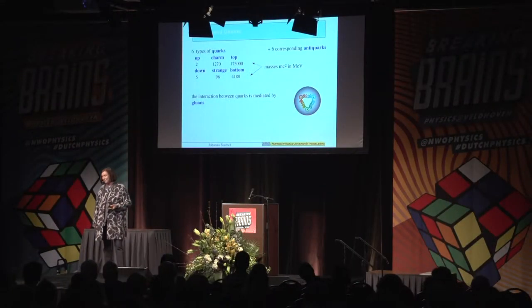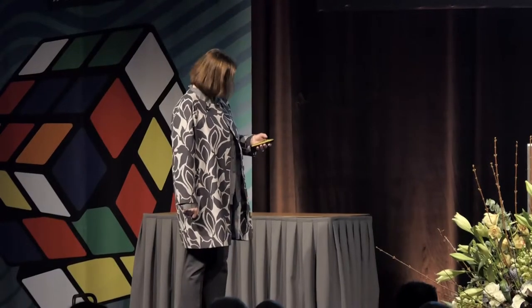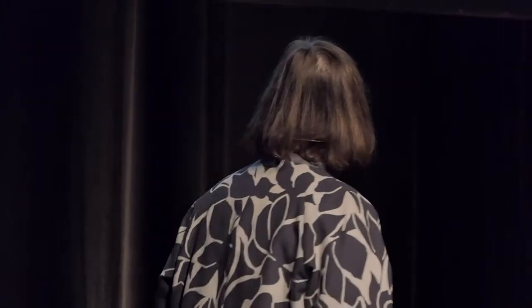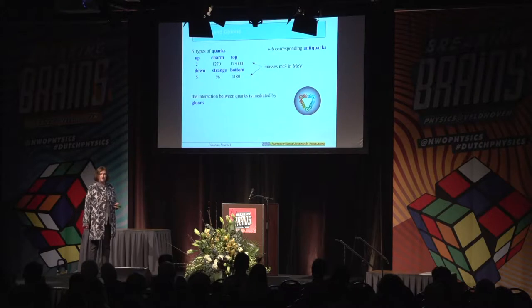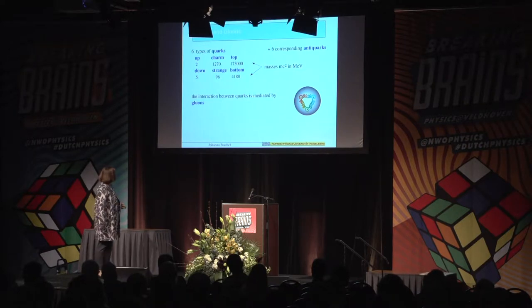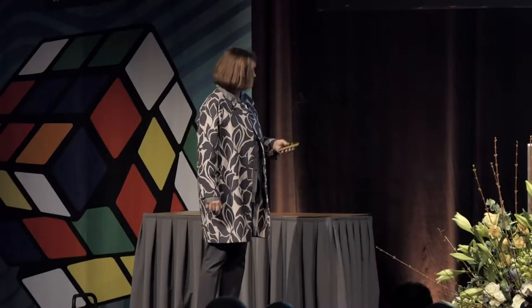Not all of you are particle physicists, so let me introduce the few ingredients you need to understand the rest of my talk: quarks and gluons. We have six types of quarks, labeled with their masses in mega-electron-volts: the up and down quarks at just 2 and 5 MeV, the strange and charm quarks at 100 and 1300 MeV, and the bottom and top quarks — the top quark has nearly the mass of a heavy nucleus like lead. There are six corresponding anti-quarks, and the interaction between quarks is mediated by gluons, as indicated by the little spirals connecting quarks in this cartoon.